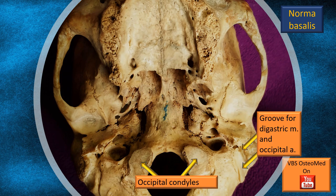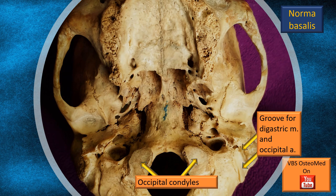We already identified the mastoid process a little while back. Medial to the mastoid process, there are two grooves. We covered these in norma lateralis as well, but they are best seen in norma basalis. The groove immediately medial to the mastoid process is for the attachment of the posterior belly of the digastric muscle, and the groove further medial to it is the groove for the occipital artery.